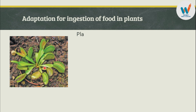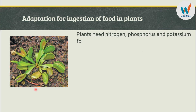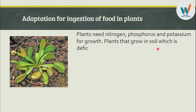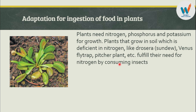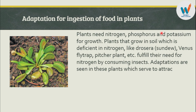The plants need nitrogen, phosphorus and potassium for growth. Plants that grow in soil deficient in nitrogen — like drosera, sundew, venus flytrap, pitcher plant etc. — fulfill their needs for nitrogen by consuming insects. These carnivorous plants can also obtain nitrogen, phosphorus and potassium by consuming insects.